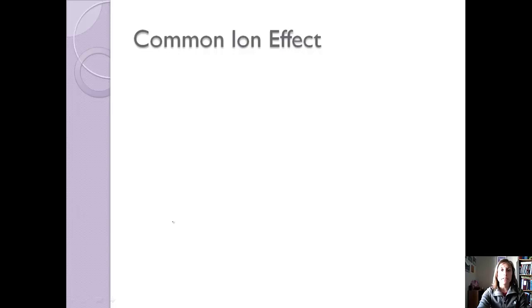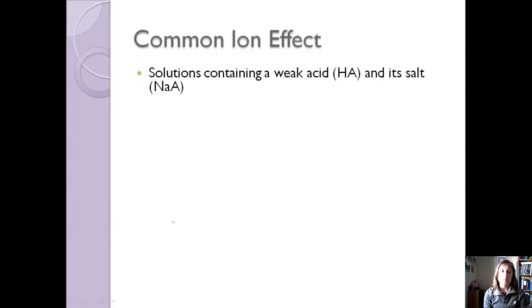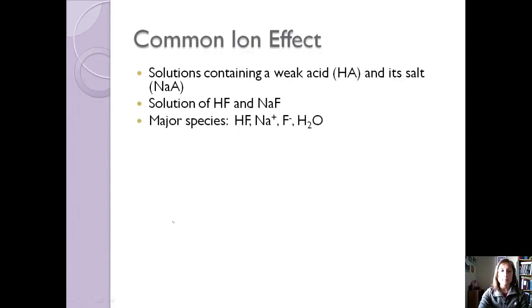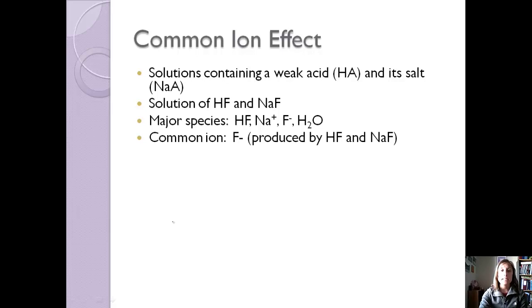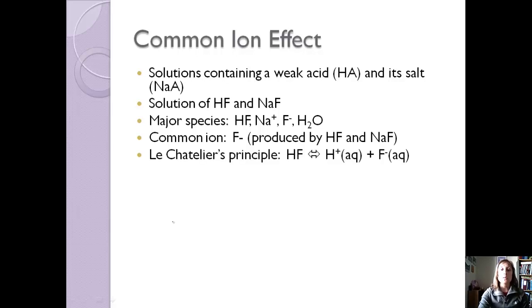Let's talk about what's called the common ion effect. When we're talking about equilibrium, we're going to be talking about solutions containing a weak acid and its salt, whereas before we had just been talking about a weak acid or a weak base. Let's say we have a solution of a weak acid, hydrofluoric acid, and its salt, sodium fluoride. The major species are hydrofluoric acid — because it's weak, it's not going to completely dissociate — the sodium ion, the fluoride ion, because sodium fluoride is a salt and completely dissociates in water, and water is our fourth species. The common ion is the fluoride ion because it's produced both by the hydrofluoric acid when it dissociates and by the sodium fluoride when it dissociates, so it's present in two of the species.